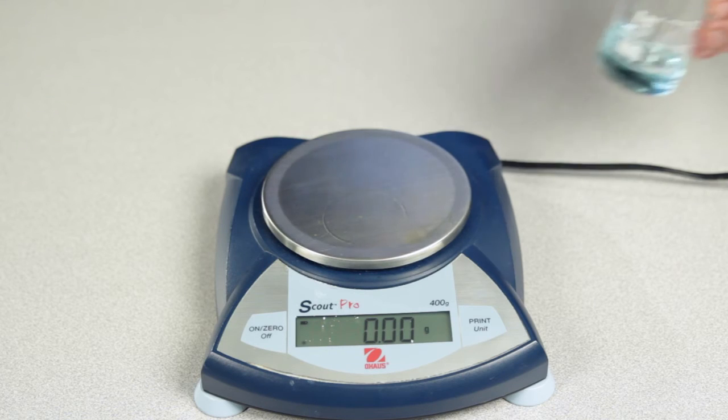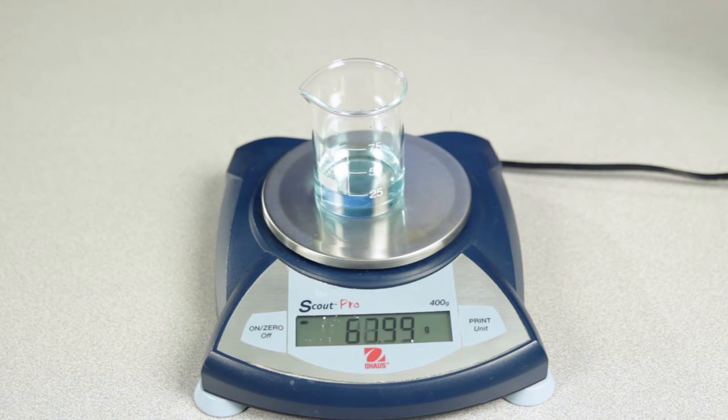Use a balance or graduated cylinder to measure the volume of the displaced water. This volume of water will equal the volume of the submerged object.